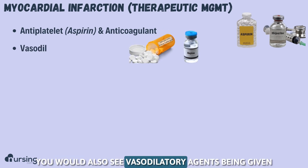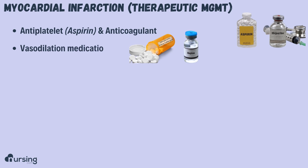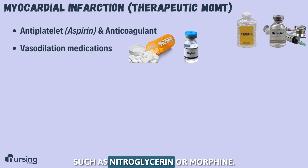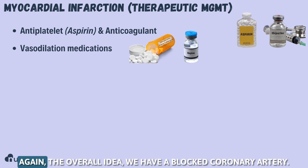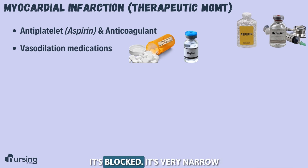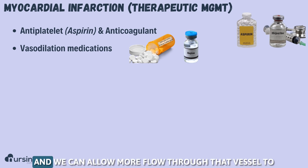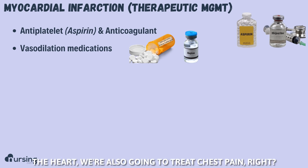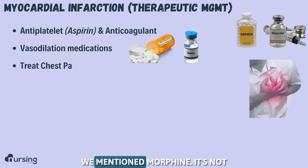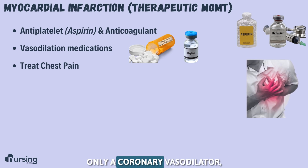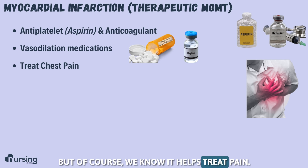You would also see vasodilatory agents being given, such as nitroglycerin or morphine. The overall idea: we have a blocked coronary artery — it's very narrow and it's hard for blood to pass through. If we can dilate that vessel, we can allow more flow through it to the heart. We're also going to treat chest pain — morphine is not only a coronary vasodilator, but of course it also helps treat pain.